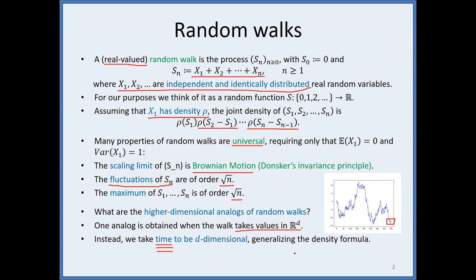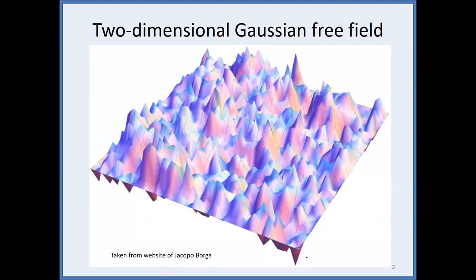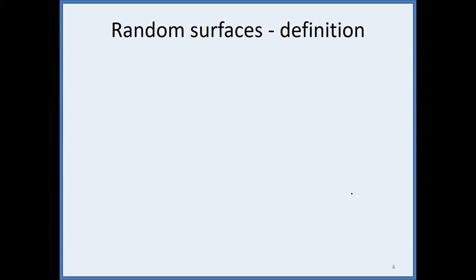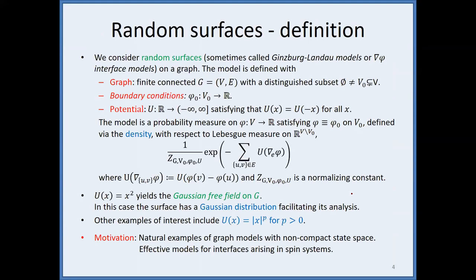Here is a picture of what you might expect: this is a picture of the two-dimensional Gaussian free field, taken from the website of Jacopo Borga. I will not investigate specifically the Gaussian free field but a more general object, as you will see. This is roughly what you may expect.